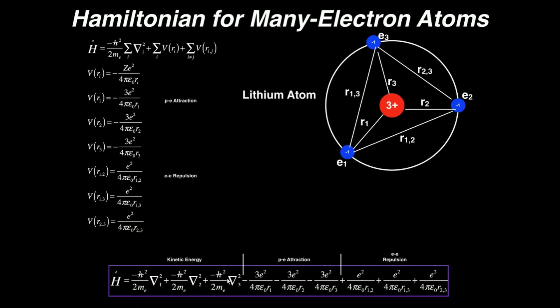The process is easy once you get the hang of it — just very mechanical and repetitive. Add up all the kinetic energy terms, which are negative, then add up all the potential energy attraction terms, then add up all the repulsion terms, which are positive. When you do these problems, the most helpful thing is to draw a free body diagram, because with many electrons it can be easy to forget some of the repulsive forces. Make sure to like this video and subscribe to the channel for future videos. Thank you very much.